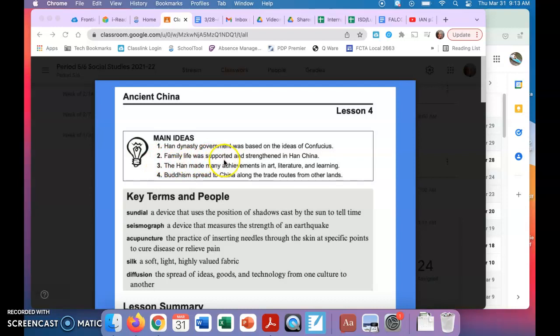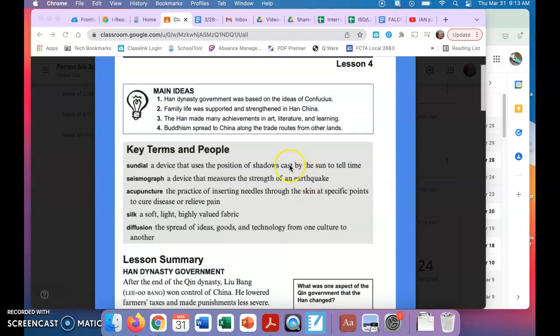Number two: family life was supported and strengthened in Han China. Number three: the Han made many achievements in art, literature, and learning. And number four: Buddhism spread to China along the trade routes from other lands. The next section here, the key terms and people, and this is an important section because this could be a spot where you gather or get information for one of your quizzes or the next quiz we take.